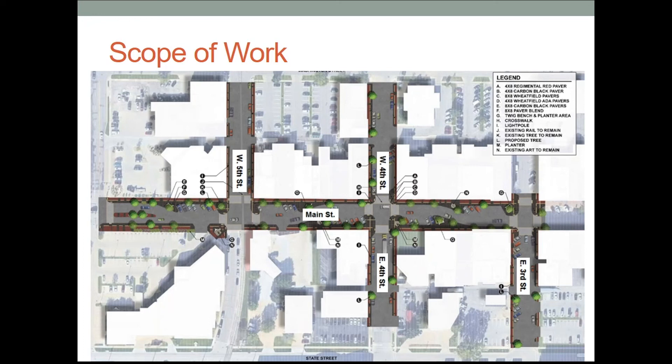West 5th Street is to be rehabilitated between Washington and Main. Some existing curb will be replaced, and new curb and gutter will be installed the full length of the street. The roadway is to be milled and overlaid with a new asphalt pavement surface, and pavers are to be placed between the building fronts and the new curb.